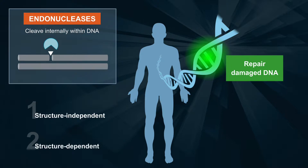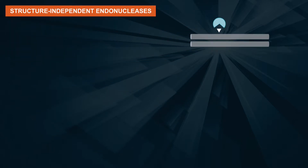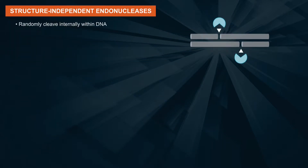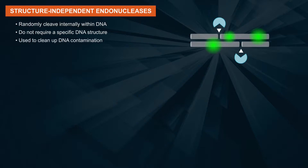Structure-independent endonucleases randomly cleave internal phosphodiester bonds and are named such because they do not require a specific DNA structure for activity. They act on canonical single- and double-stranded DNA.